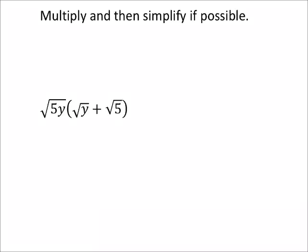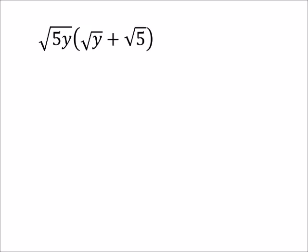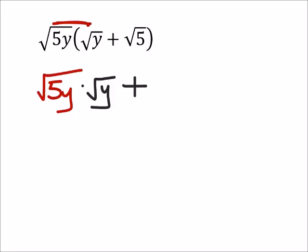Multiply it and simplify if possible. Okay, let's do so. Let's go ahead and distribute this square root of 5y, so that would give me the square root of 5y times the square root of y, and we're going to add—we need to distribute it also to the square root of 5.